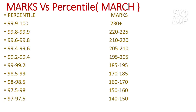For 97 to 97.5 percentile, you need 140 to 150 marks — this is the safest score for OBC and EWS candidates targeting CS in any NIT. For 96 to 97 percentile, you need 120 to 140 marks, and this range can get you a core branch in the top 10 NITs if you are a general category student.